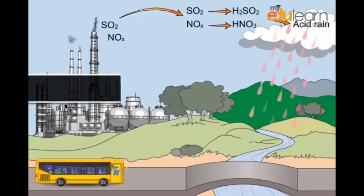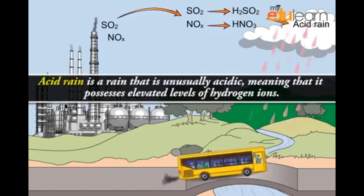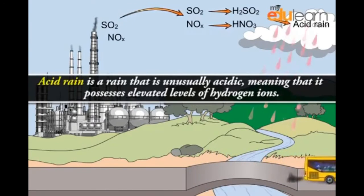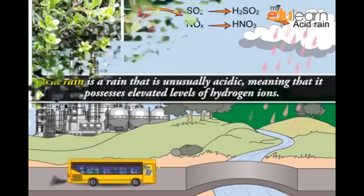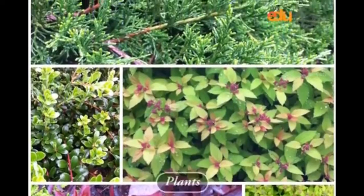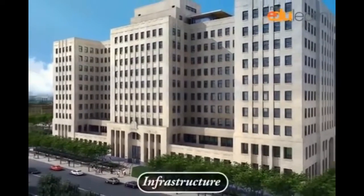Dear students, acid rain is a rain that is unusually acidic, meaning that it possesses elevated levels of hydrogen ions. It has harmful effects on plants, aquatic animals, and infrastructure.